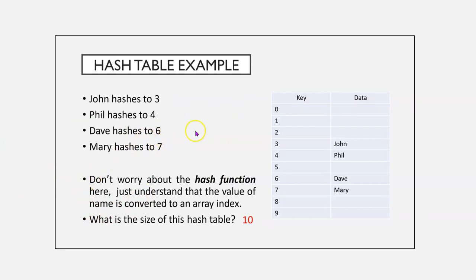So, let's take an example. Don't worry about the hash function. Just understand the value of the name is converted to an array index. So, the size of this hash table is 10. The name John will hash to 3, Phil hashes to 4, David to 6, and Barry to 7.